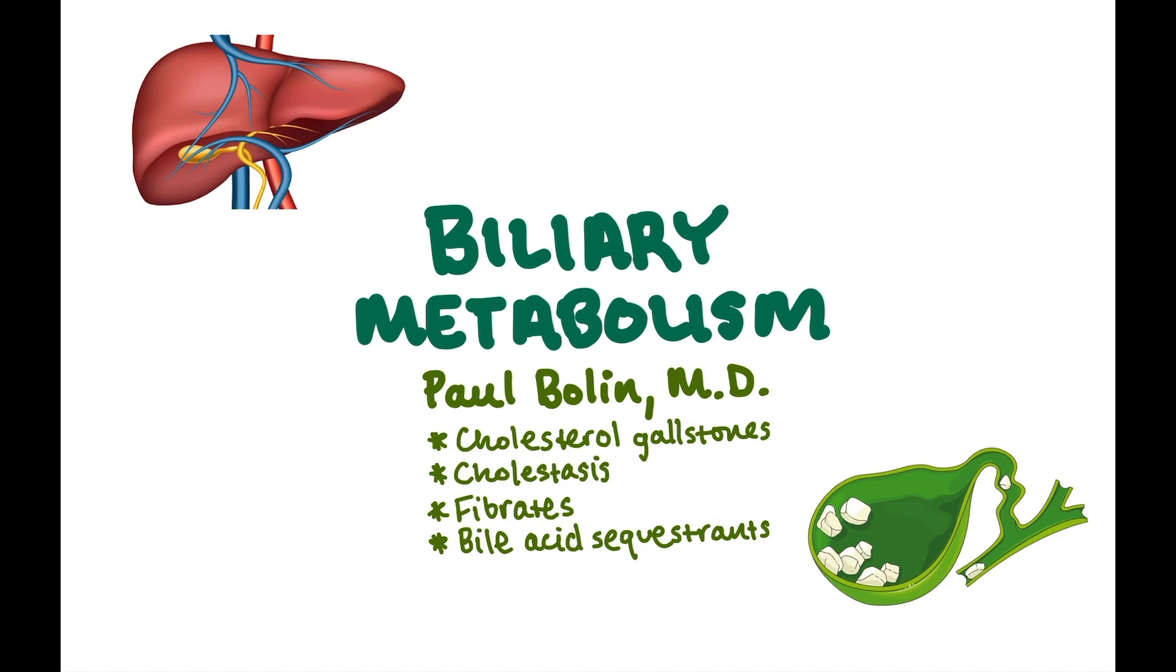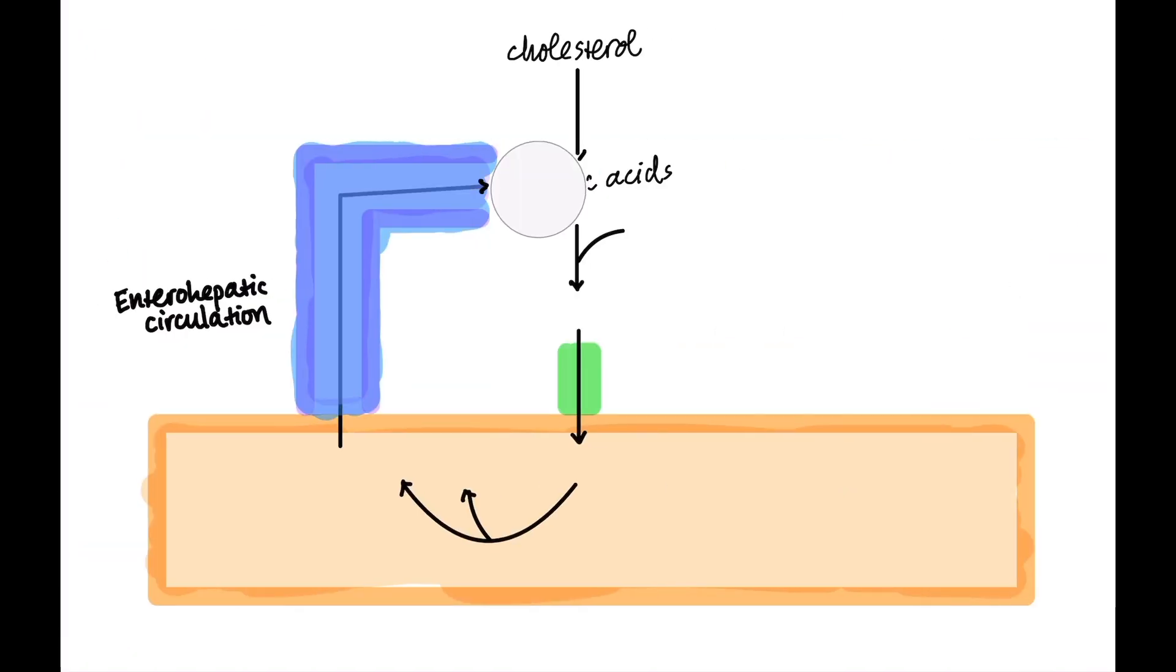We're going to focus in and what I want you to really take from this talk is where certain drugs interfere with this pathway and where you can get disease and why the diseases cause the manifestations that they do. Let's start out with our pathway here. We start out with cholesterol and cholesterol is the precursor for bile salts and bile acids. The first thing we do is we convert this into something called colic acid. The other is called chenodeoxycholic acid. Just know that cholesterol gets converted into colic acid.